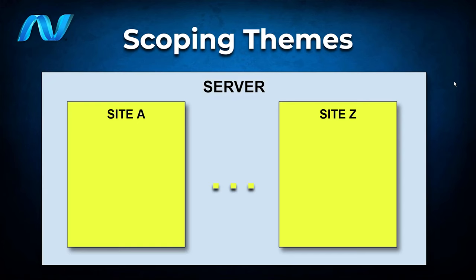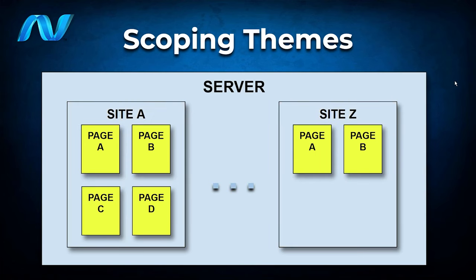Themes can also be scoped at the site level so that each site will have its own theme. Themes can also be scoped to the page level, so that a page can have its own theme, or maybe a feature on the page — for example, an exports or products page or sections can have a different theme as well.